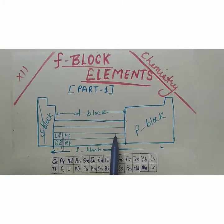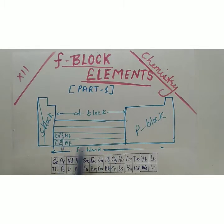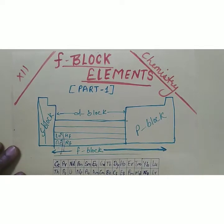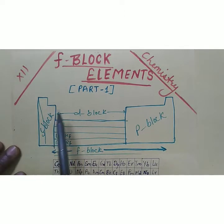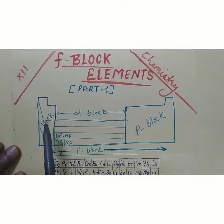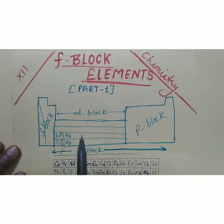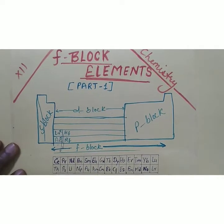First of all, we are seeing the position of F block elements in the periodic table. In the periodic table, this is the S block where an electron enters in S orbital. It is P block. Between the S and P it is D block, and below the D block it is F block.